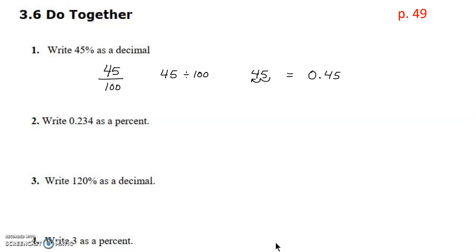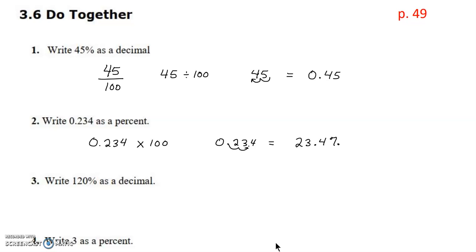For number two, we're changing a decimal to a percentage, so we're multiplying by 100. We take 0.234 and multiply by 100. Moving the decimal two places to the right gives us 23.4%. Percentages aren't bound to be whole numbers — you can have a decimal percentage, as in this example, 23.4%.